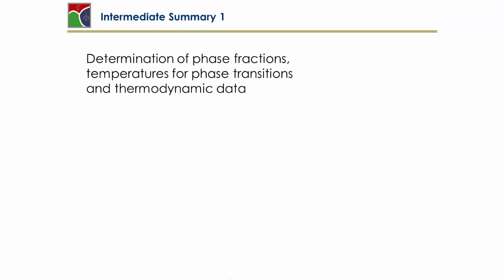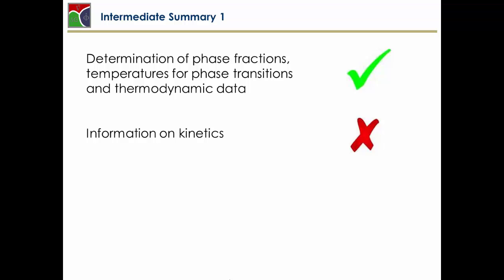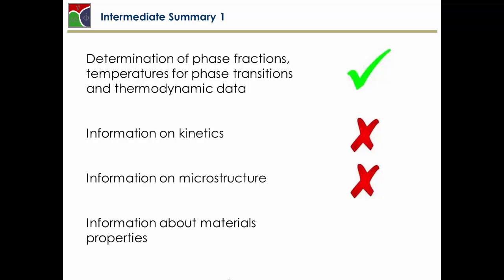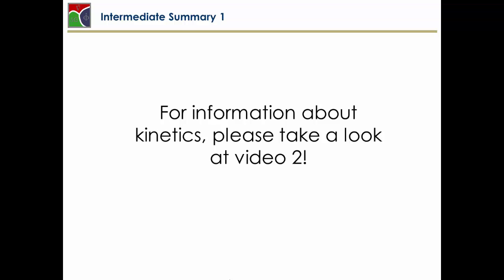This brings us to a first intermediate summary. Based on thermodynamic databases, we can easily determine phase fractions, temperatures for phase transitions, and thermodynamic data like specific heat or coefficients of thermal expansion and others. However, we have no information on kinetics, no information on microstructure, and no information about materials properties. Having the first grip to go to kinetics will be the next section.